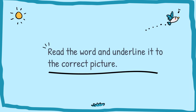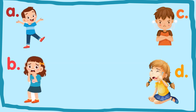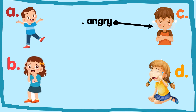Now, read the word and underline it to the correct picture. There are four pictures over here. The first one is angry. Which person is angry? You are right. This boy is angry.